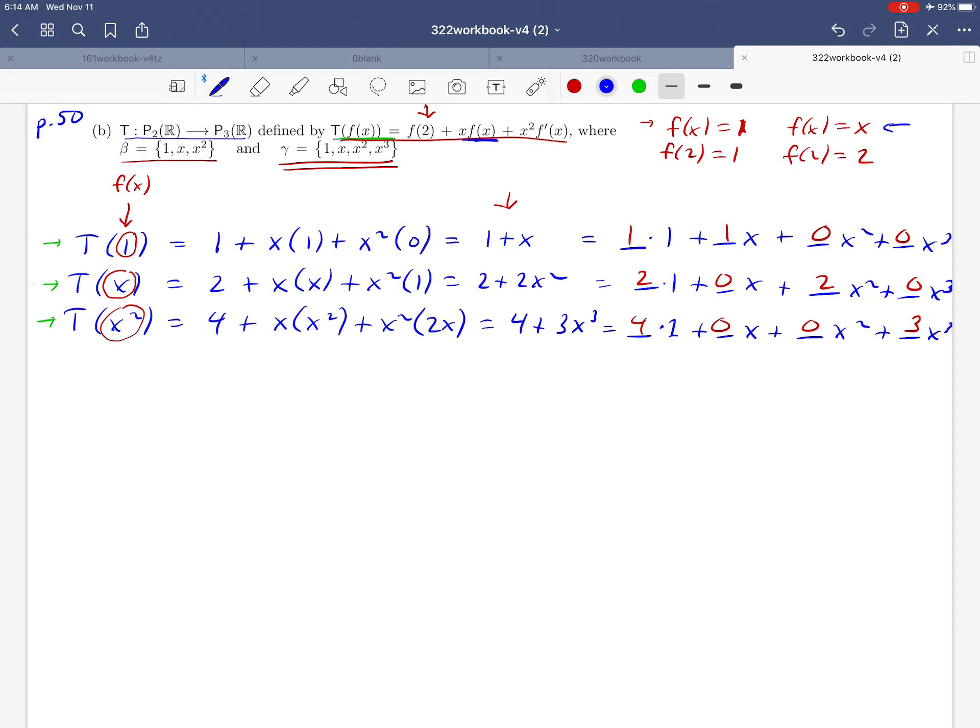And as we've seen before, the matrix that we're looking for, going from beta to gamma, we're just going to look up at the calculations that we did and identify our columns. So first column would look like that: 1, 1, 0, 0. And so on. So the next one would be 2, 0, 2, 0. And then finally, 4, 0, 0, 3. And there is our matrix for T.